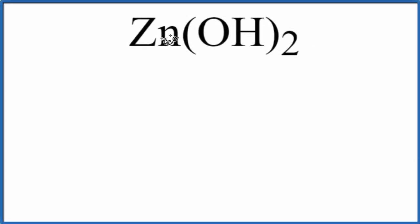To find the number of atoms in zinc hydroxide, that's Zn(OH)₂, let's first write down each one of the elements.